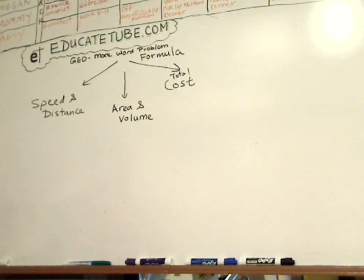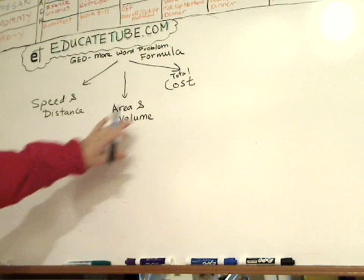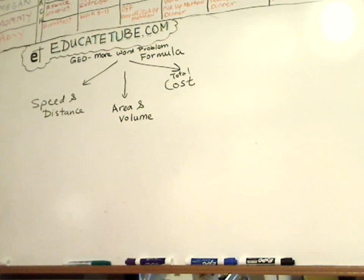Welcome back to EducateTube.com. My name is Sivsky, your host. Today we'll be talking more about word problems. But specifically, we want to talk about the formula that's needed to solve these word problems. So, the main word problem that you might see quite often is speed and distance, area, volume, and cost, total cost. So, let's go through each one of them and see what kind of formula you would need.